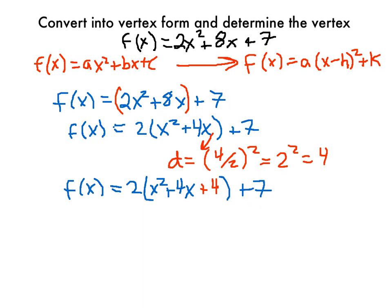What we just added, by putting this plus 4 here, we actually added 2 times 4. We added a value of 8 to this side compared to what we originally had. So in order to cancel that out, I'm going to have to subtract 2 times 4. Because we need to keep this side the same.